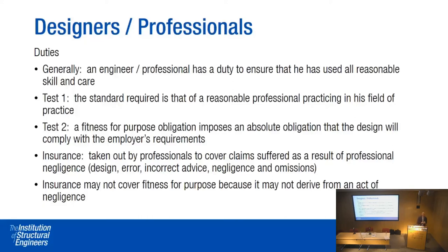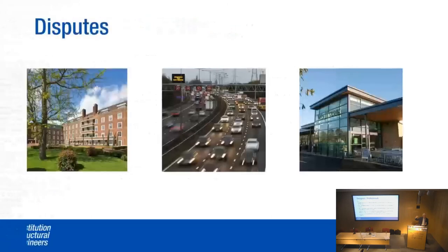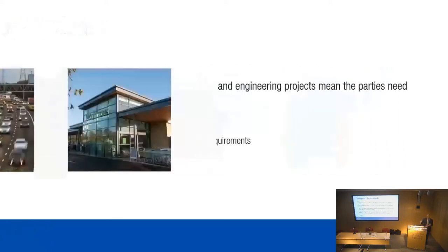A very important area for professionals and structural engineers is insurance. There is professional indemnity insurance that can be taken out to cover claims suffered as a result of negligence — such as design error, incorrect advice, negligence, and omissions. Importantly, if you have an absolute fitness for purpose obligation in your contract, your PI insurance may not cover you for it — it may be excluded from the policy.